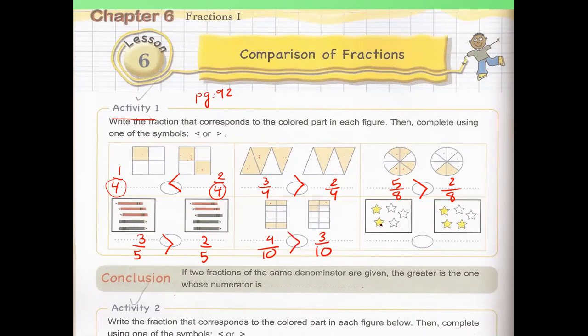The last one. How many yellow stars do we have? Two out of five. And here, three out of five. In which one do we have more yellow stars? More in the second one — and we have three stars.